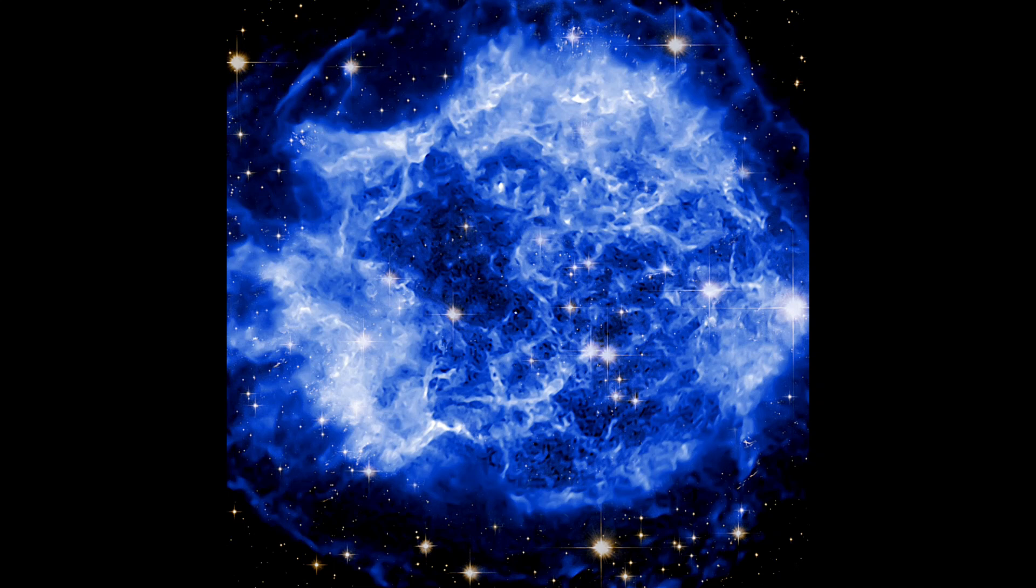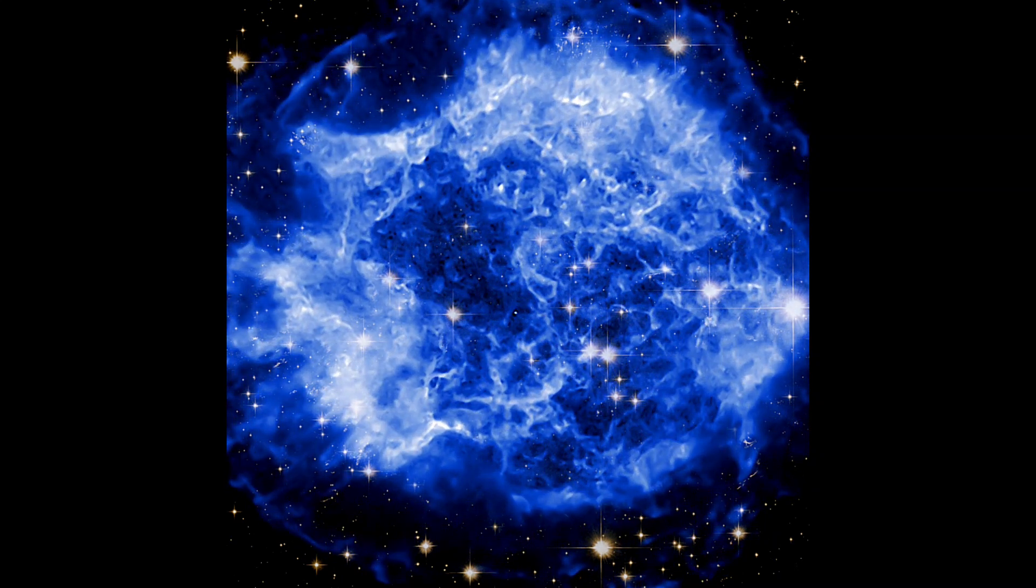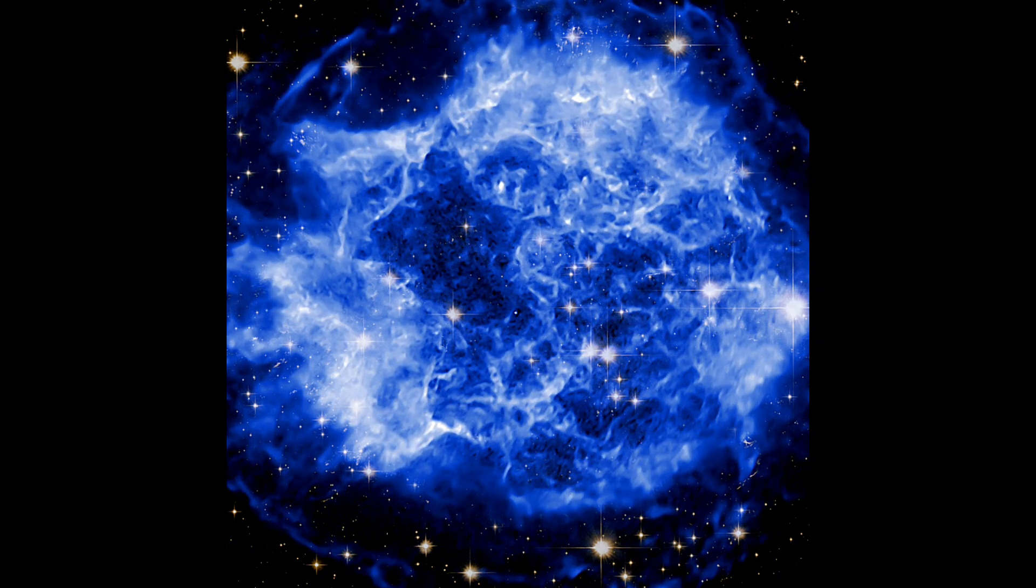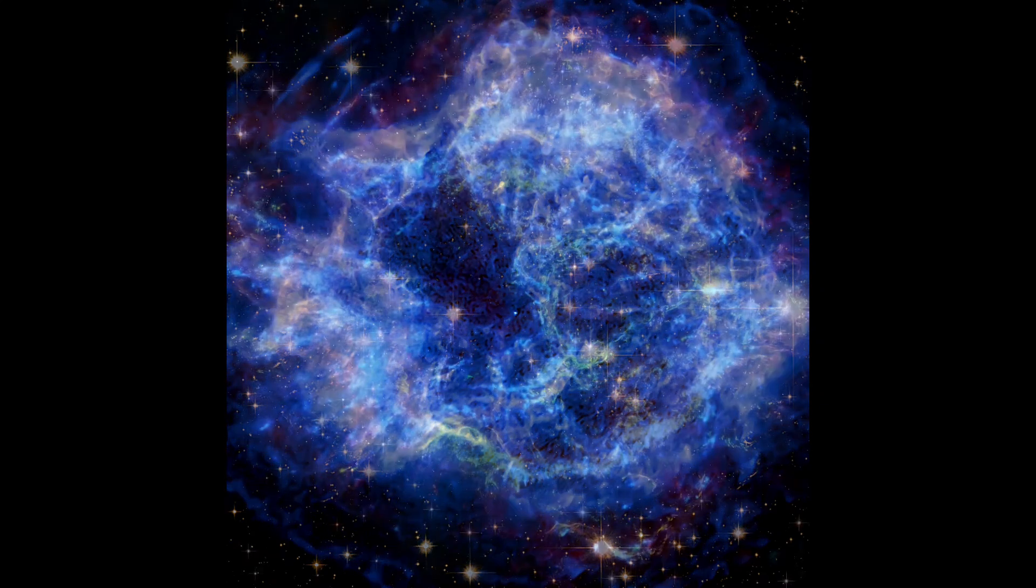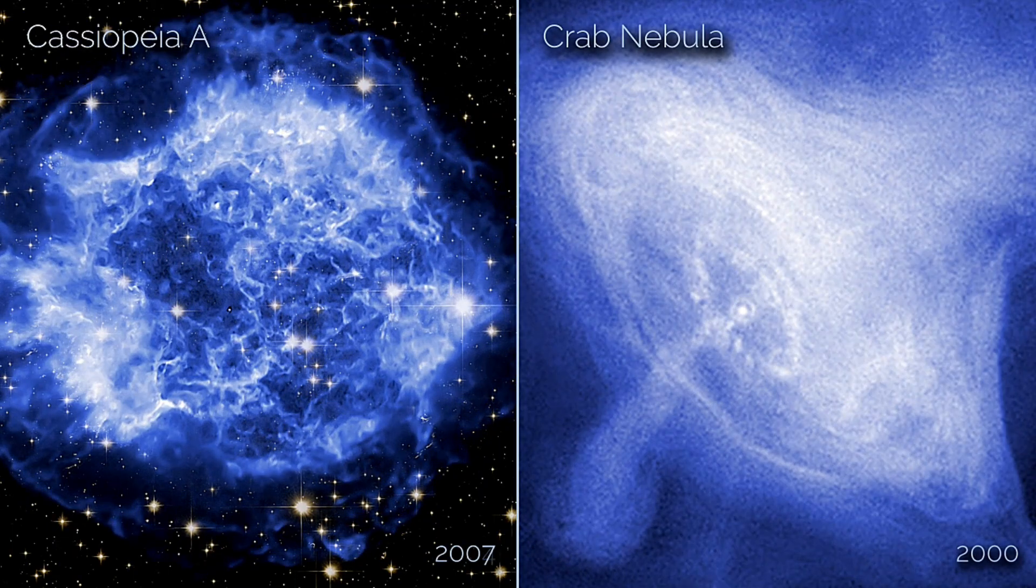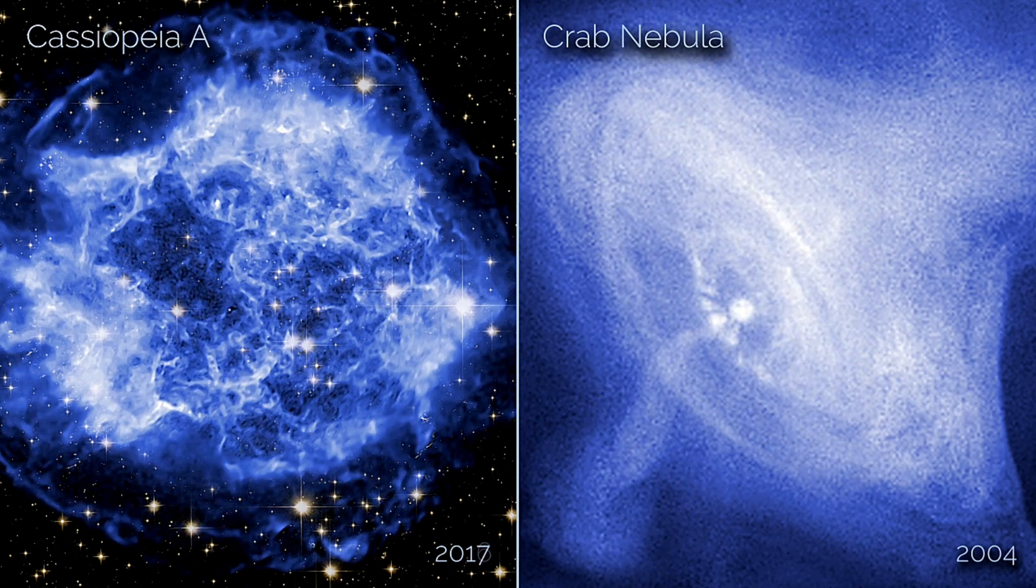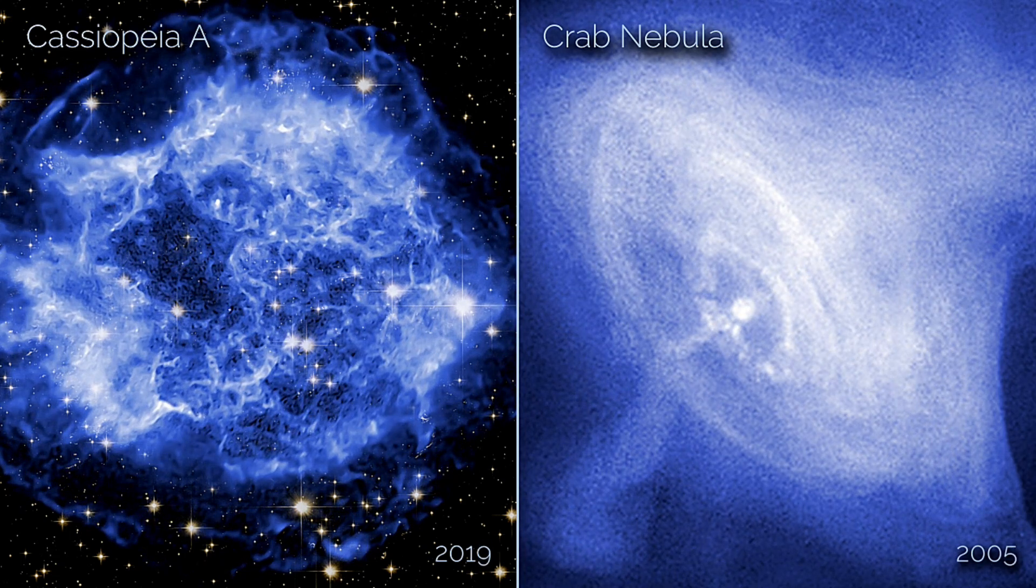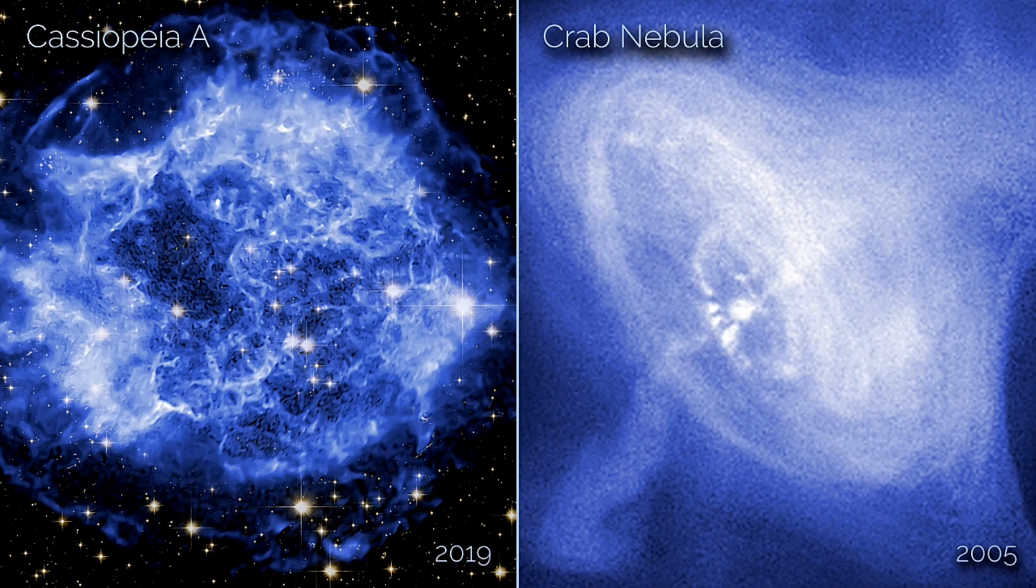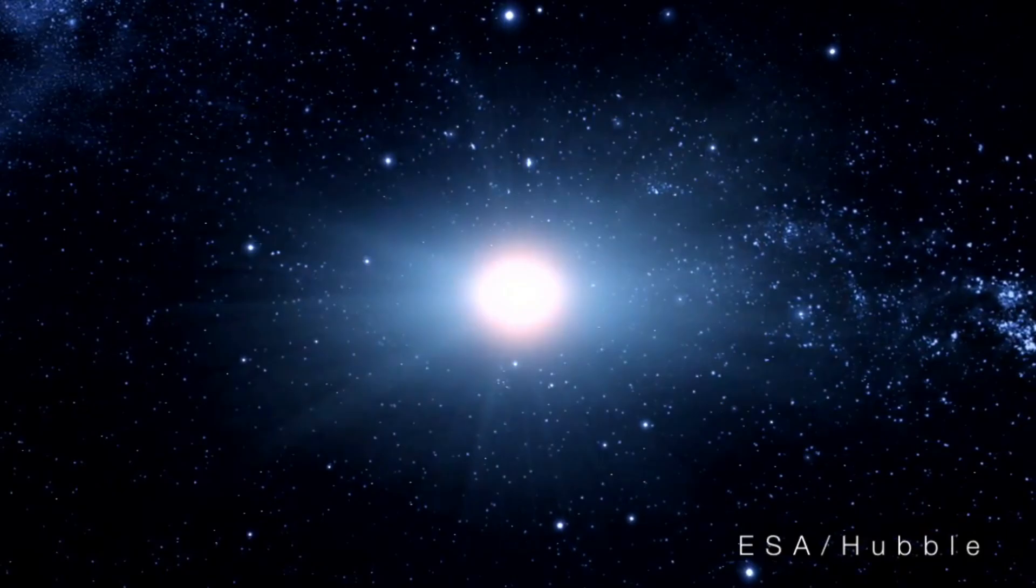Previous Chandra movies of Cass A included data from 2000 to 2013, but this new movie extends from 2000 to 2019. The outer region of Cass A shows the expanding blast wave of the explosion, akin to sonic booms from a supersonic jet. These shock waves accelerate particles to energies higher than those produced by Earth's most powerful accelerator, the Large Hadron Collider.